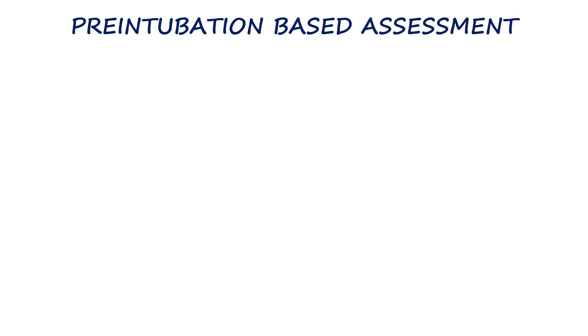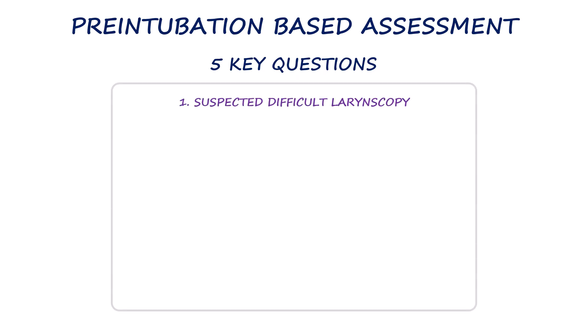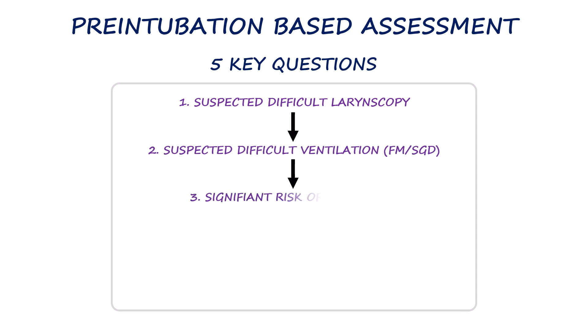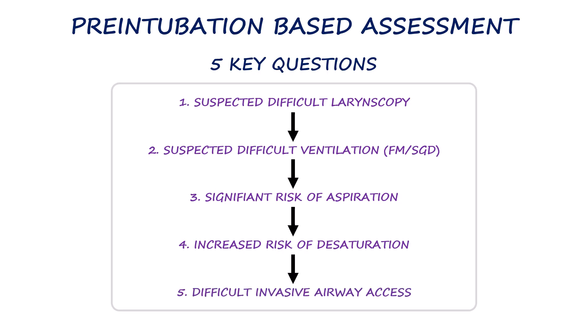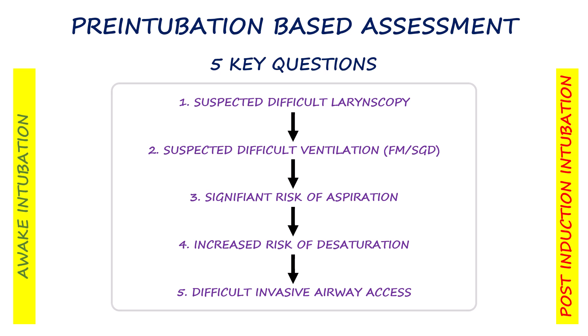In pre-intubation planning, we assess five key areas as recommended by the American Society of Anesthesiologists. The five questions we ask are: whether laryngoscopy is likely to be difficult, whether ventilation with a face mask or supraglottic device will be challenging, whether the patient carries a significant risk of aspiration, whether they are likely to desaturate rapidly during apnea, and whether performing an emergency invasive airway such as cricothyrotomy would be difficult. Based on these five key questions, we plan whether to proceed with induction and intubation or perform awake intubation.